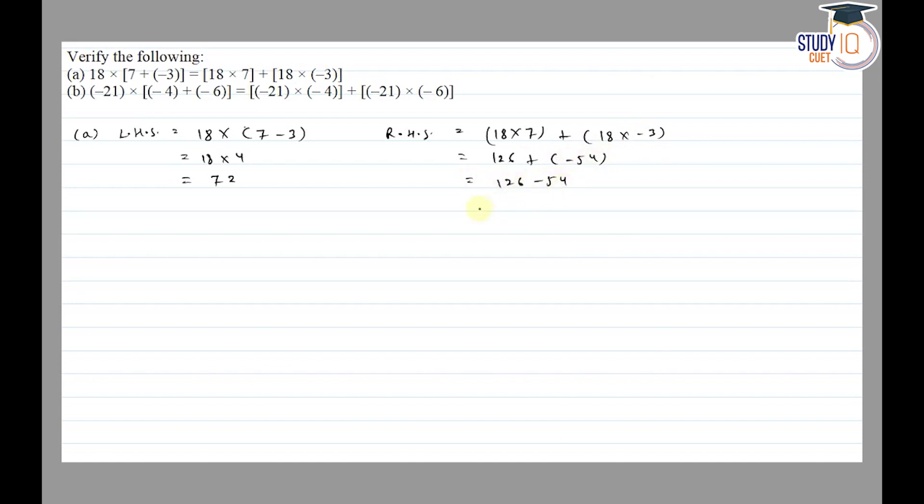So LHS is equal to RHS, so it's verified. Part (b): minus 21 into minus 4 plus minus 6.